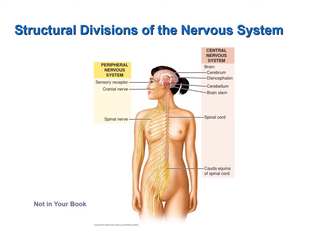Structurally, the nervous system is divided into the central nervous system and the peripheral nervous system, based on the location of structures. The central nervous system only includes the brain and the spinal cord — nothing else. All other components are part of the peripheral nervous system: the cranial nerves that extend from the brain, the spinal nerves that extend from the spinal cord, and the peripheral nerves that extend into our arms and legs.